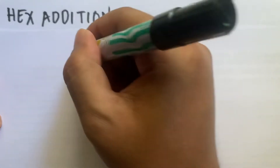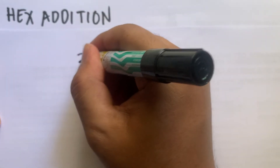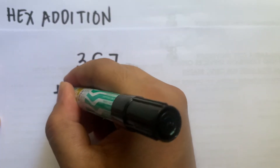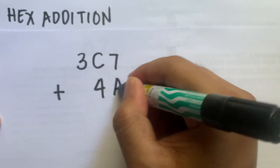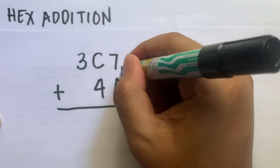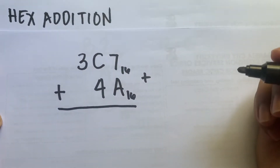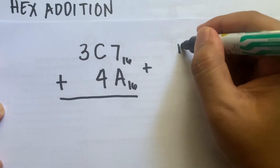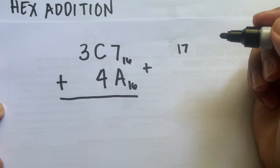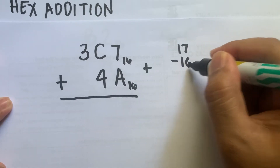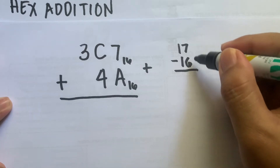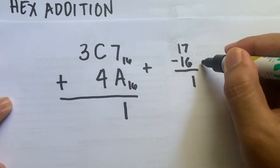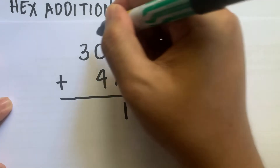Let's have another example of hexadecimal addition. Say you are given 3C7 plus 4A, in hexadecimal. We start with the rightmost digits: 7 plus A. A is 10, so 7 plus 10 is 17. Since 17 is already an invalid hexadecimal number, we subtract 16 (because we are in base 16). 17 minus 16 is 1, so 1 goes here, and we carry 1 since we subtracted 16 once.